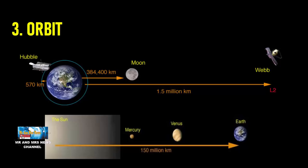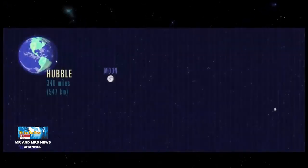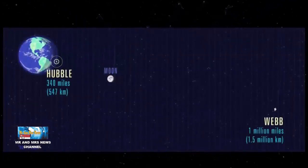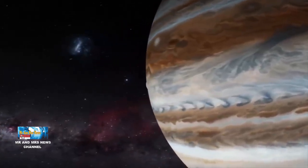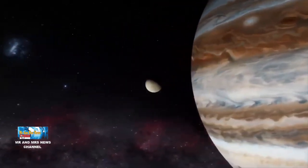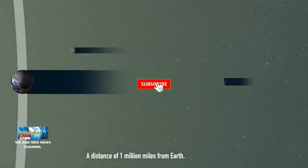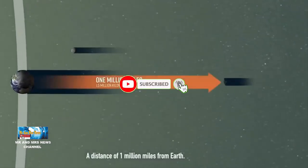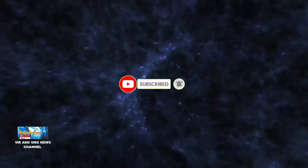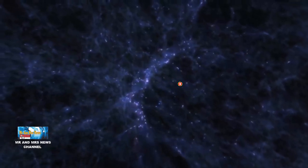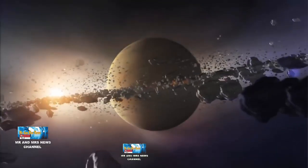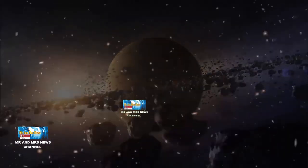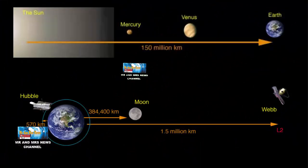Yang ketiga, orbit. Bumi berada 105 juta kilometer dari matahari, dan bulan mengorbit bumi pada jarak sekitar 384.500 kilometer. Teleskop luar angkasa Hubble mengorbit di sekitar bumi pada ketinggian 570 kilometer di atasnya. Webb tidak akan benar-benar mengorbit bumi, melainkan akan duduk di titik Lagrange L2 bumi-matahari 1,5 juta kilometer jauhnya.